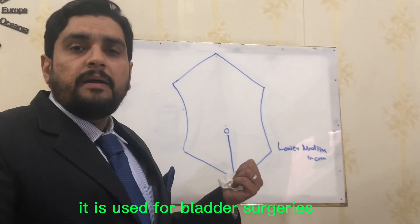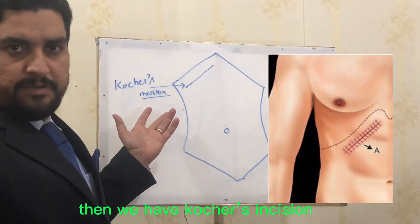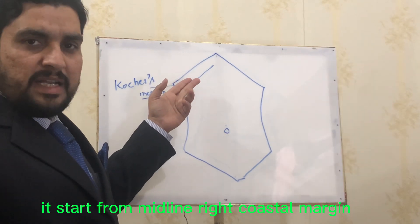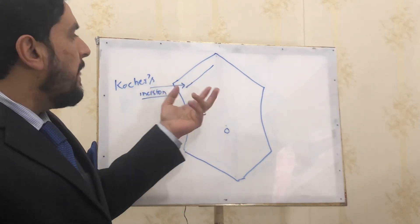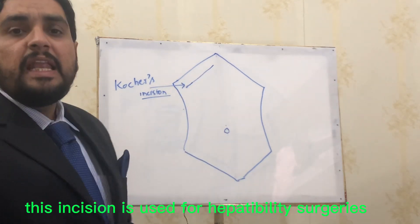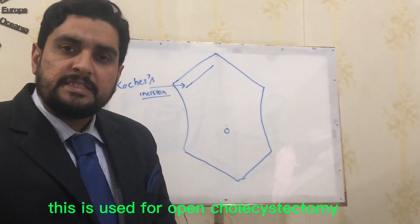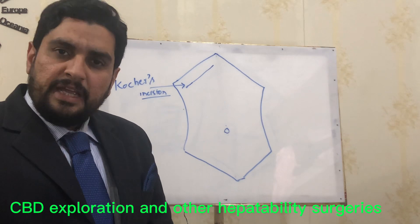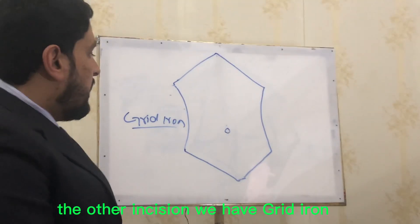It is also used for bladder surgeries. Then we have the Kocher incision. It starts from the midline at the right costal margin, two finger-breadths or two centimeters below the costal margin. This incision is used for hepatobiliary surgeries, but most commonly it is used for open cholecystectomy, CBD exploration, and other hepatobiliary surgeries.